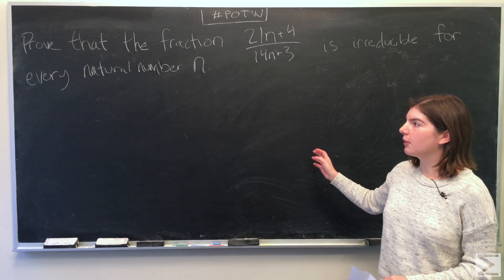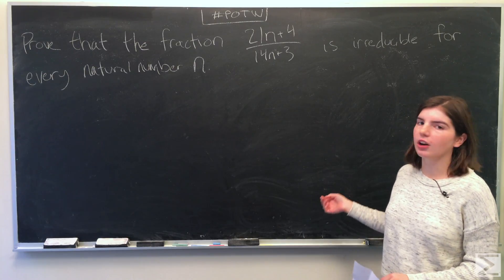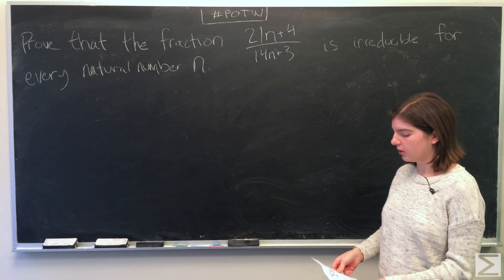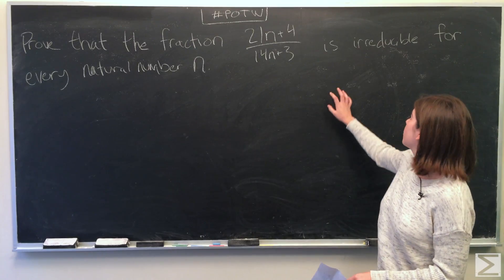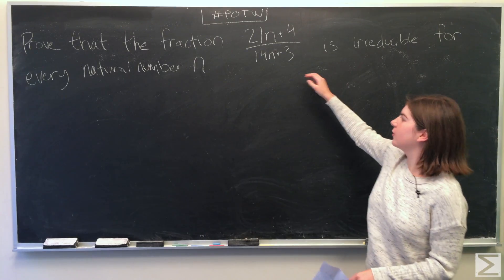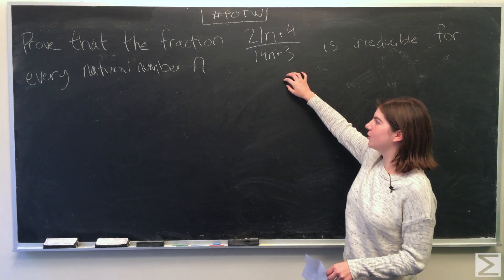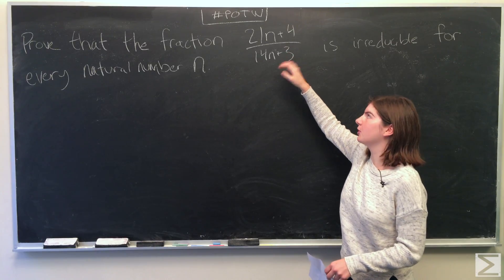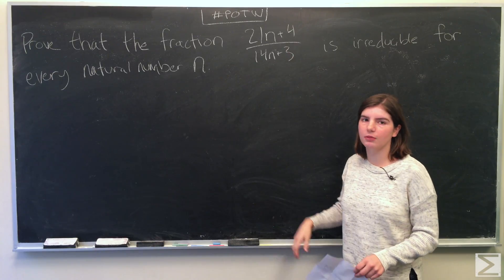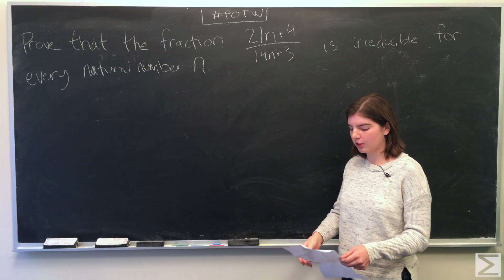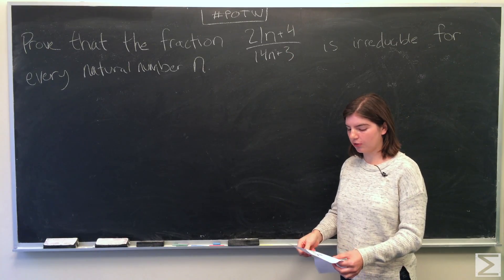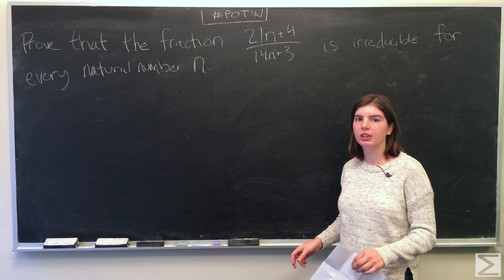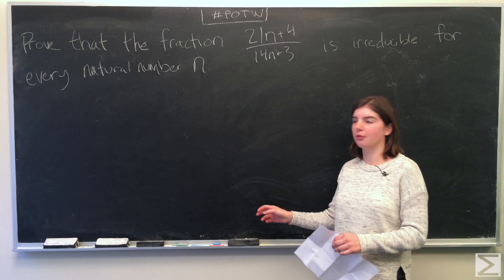There are many methods you can use to solve this problem. I'm going to show you two of them. To prove that a fraction is irreducible, you want to show that the denominator and the numerator have no common factors. So we're going to find the greatest common divisor and we'll use Euclidean's algorithm.